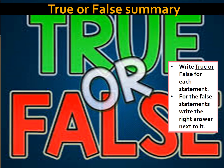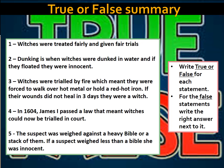Now, thinking about what we've covered in today's lesson, you have a true or false summary. Write true or false for each of these statements, and for any false statements write the correct answer next to it. The statements are: one — witches were treated fairly and given fair trials; two — dunking is when witches were dunked in water and if they floated they were innocent; three — witches were trialled by fire, forced to walk over hot metal or hold a red-hot item, and if their wounds did not heal in three days they were a witch; four — in 1604 James I passed a law that meant witches could now be trialled in court; five — the suspect was weighed against a heavy Bible or stack of them, and if a suspect weighed less than a Bible she was innocent.